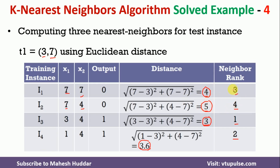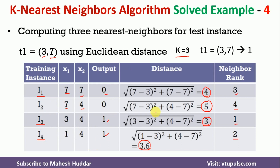Once we assign neighbor ranks, we check the K value, which is 3. So we identify the three nearest neighbors: the first is i3, the second is i4, and the third is i1. The output variable for these neighbors is 0 (i3), 1 (i4), and 1 (i1). The majority is 1, so the new instance is classified as class 1.